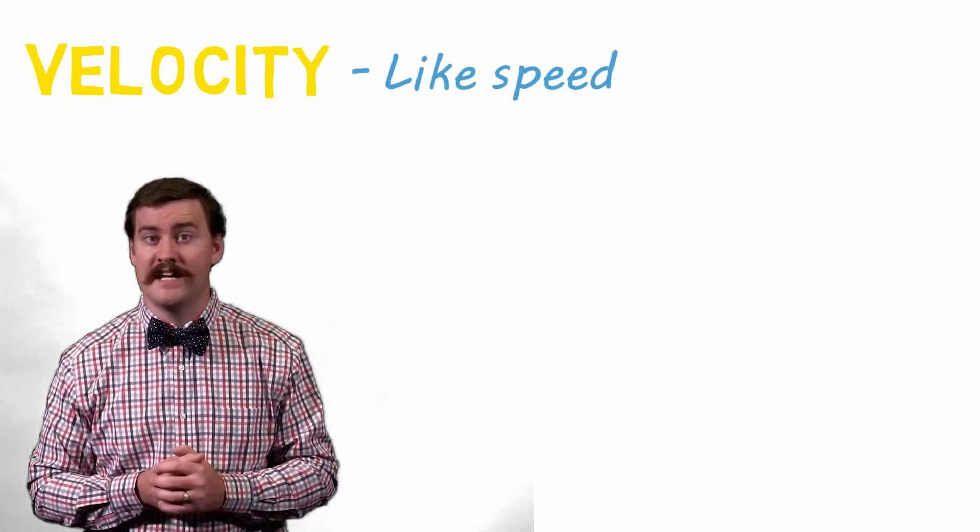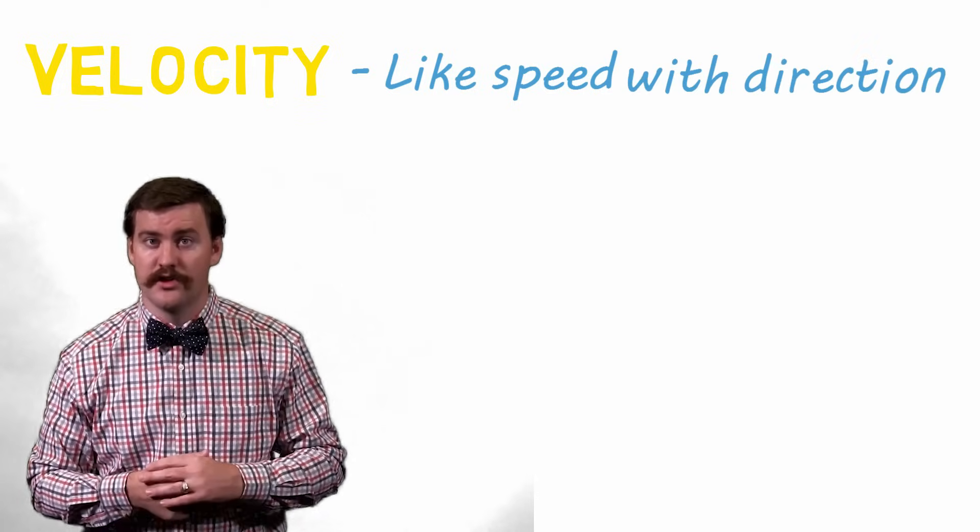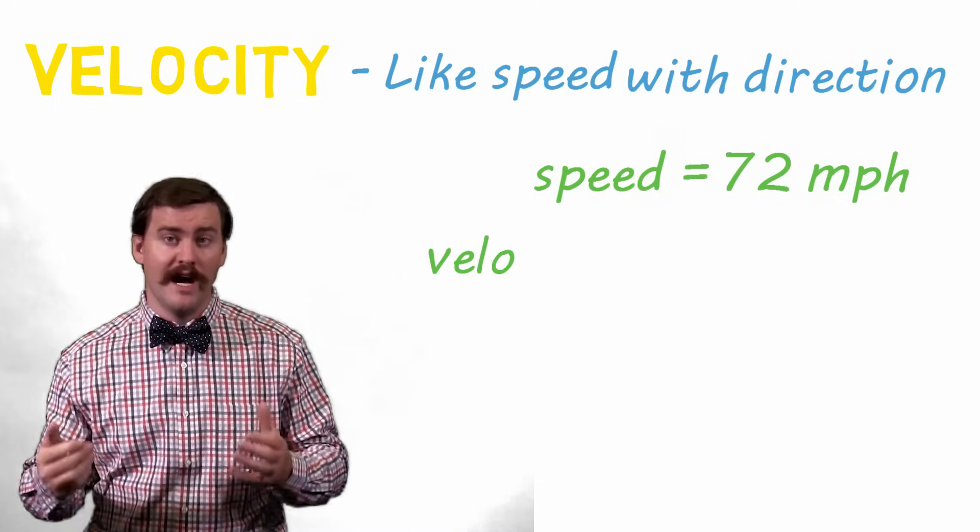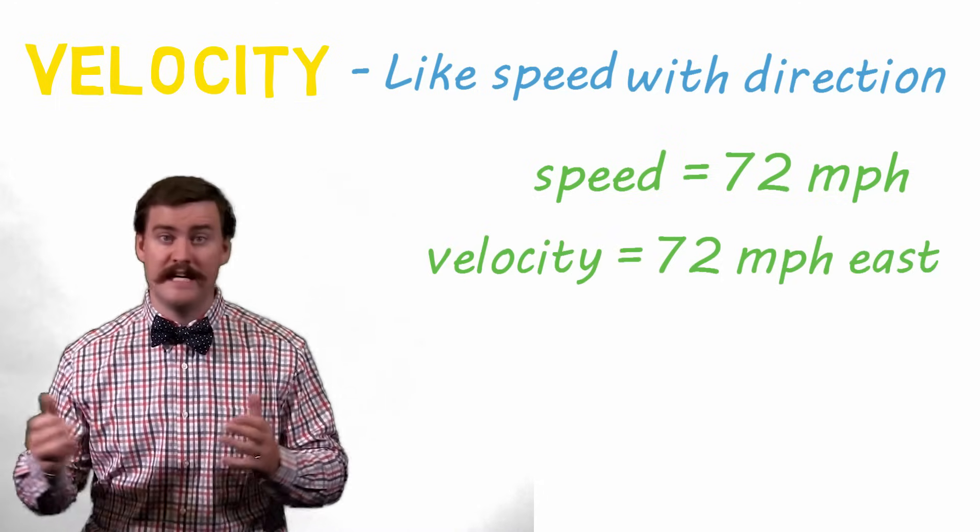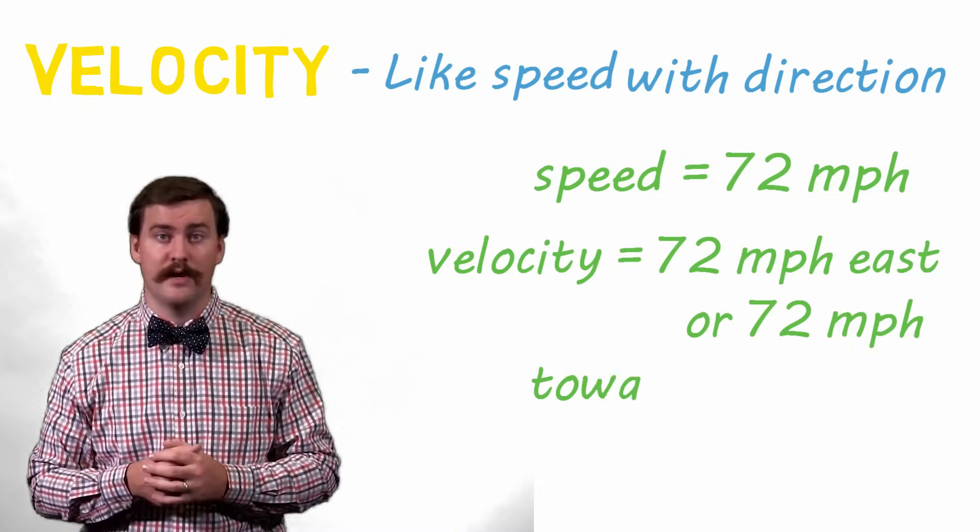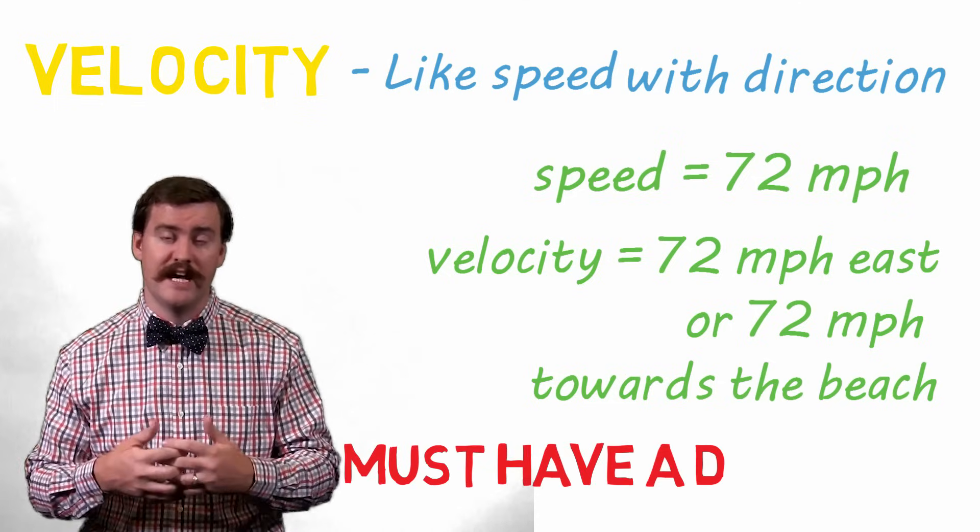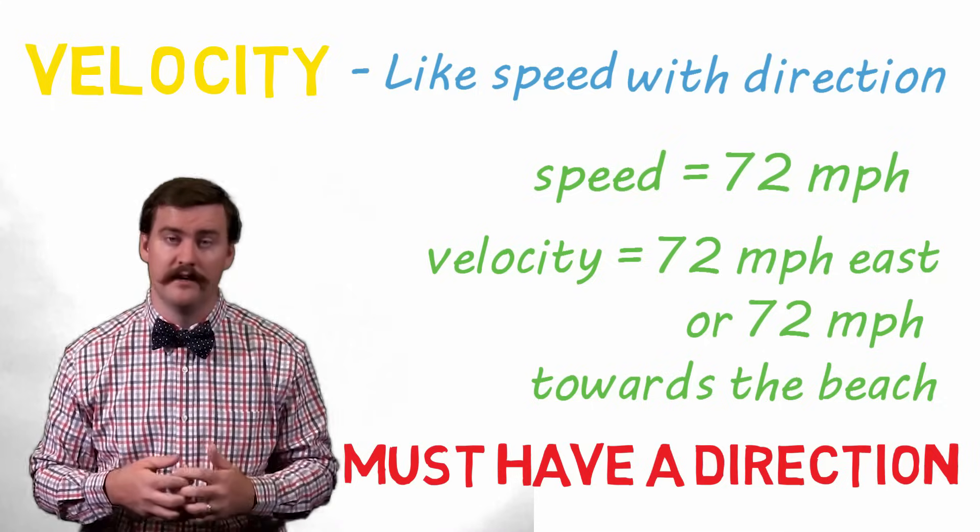It's a vector, which means it has a direction attached to it. So while your speed may have been 72 miles per hour, your velocity was 72 miles per hour east, or 72 miles per hour towards the beach. There just has to be some direction attached to the speed to make it a velocity.